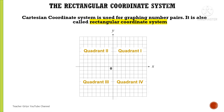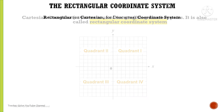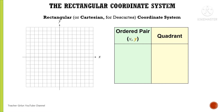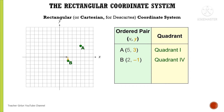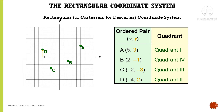Let's discuss the four regions further. We have a table here and a Cartesian plane. Point A has ordered pair (5, 3) and is located in Quadrant 1. Point B has ordered pair (2, -1) and is located in Quadrant 4. Point C has ordered pair (-2, -3) and is located in Quadrant 3. Point D has ordered pair (-4, 2) and is located in Quadrant 2.